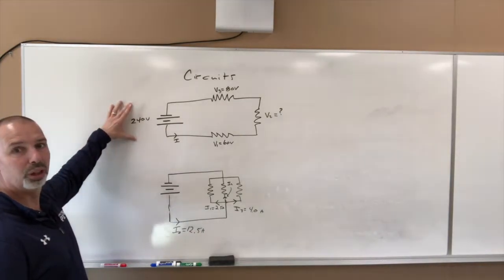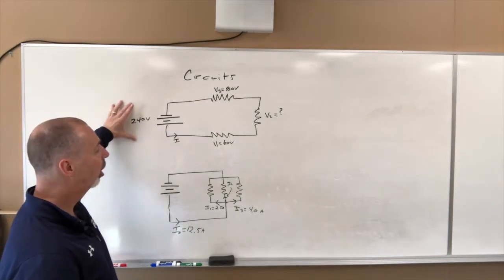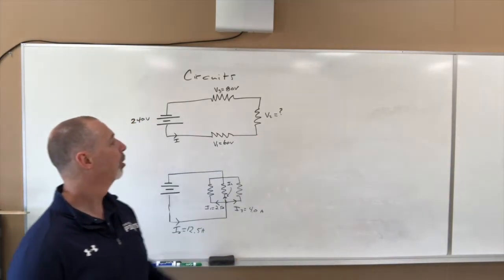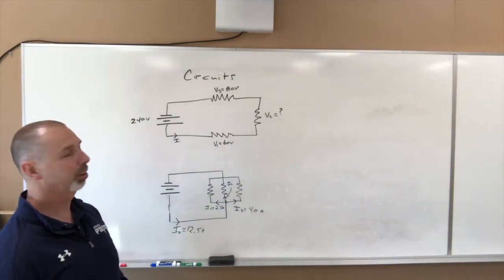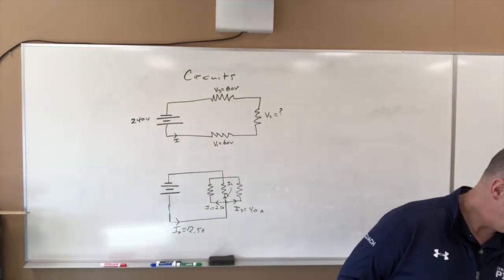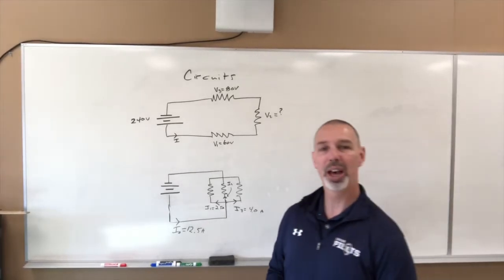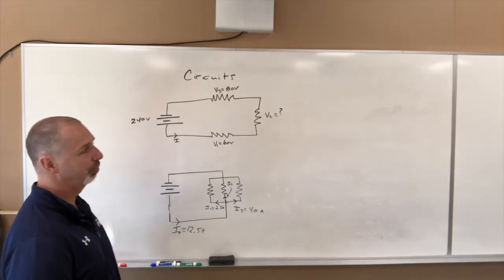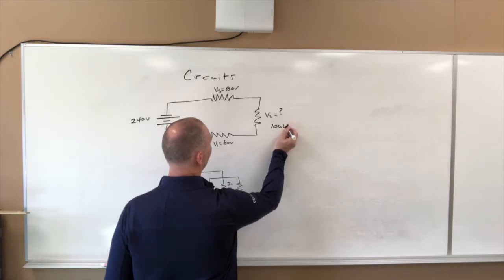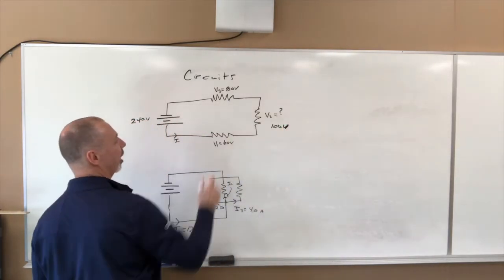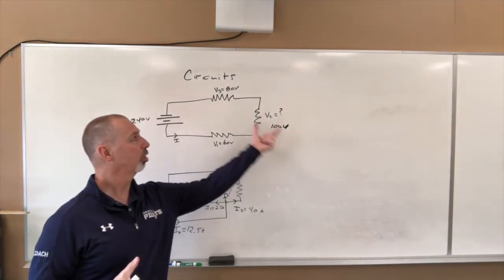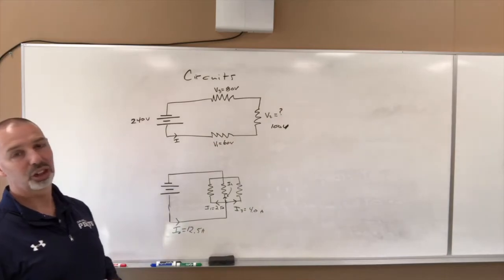So here I have a 240 volt potential difference source, and I have an 80 volt drop and a 60 volt drop, so then what would be the drop for, what would be the potential difference on V2? And of course, we can quickly do that math and get 100 volts for V2. So with this being 100, now we have 60, 180, which equals the 240, so that's Kirchhoff's voltage law, that the sum of the drops has to equal the increase.